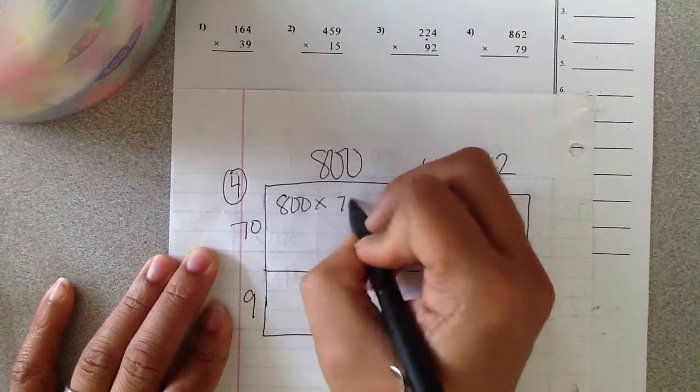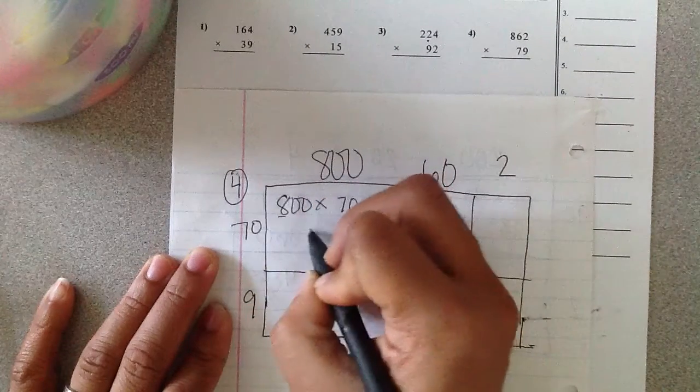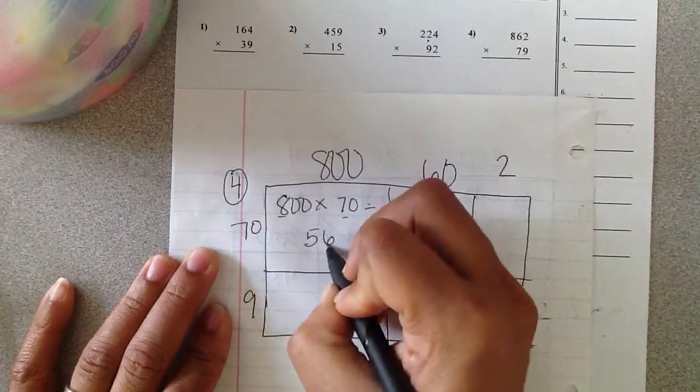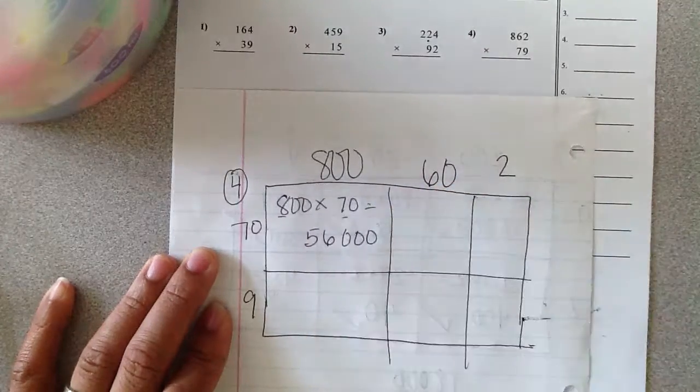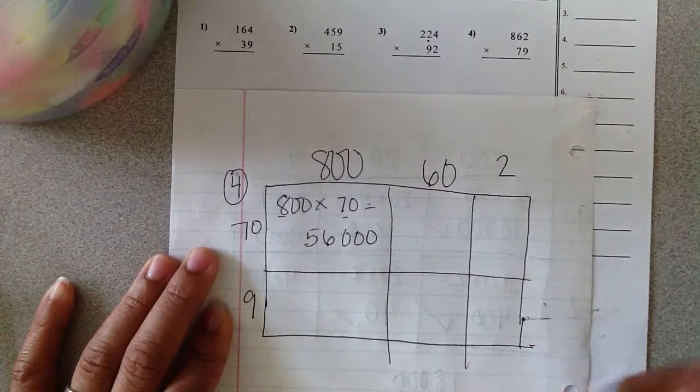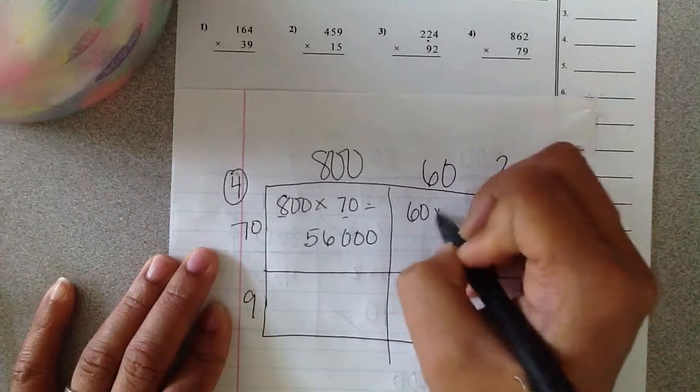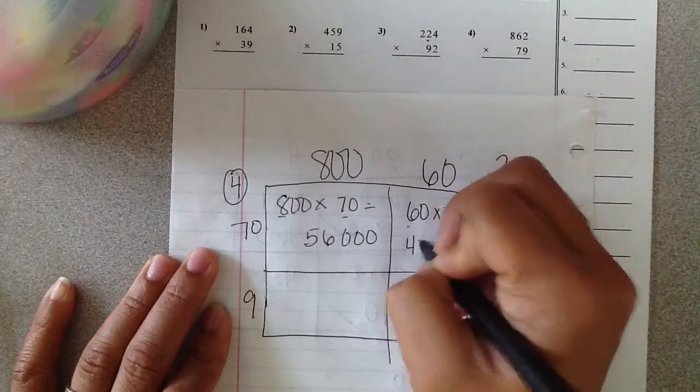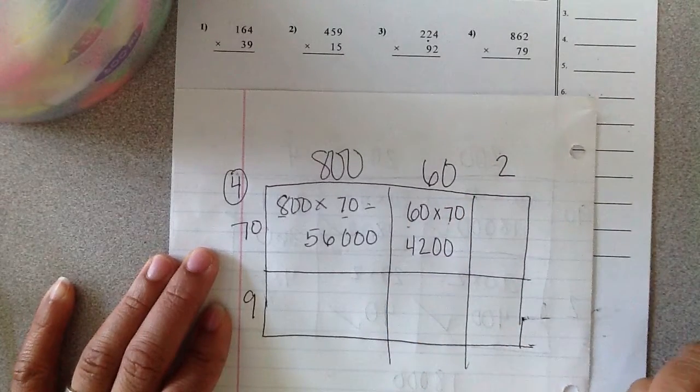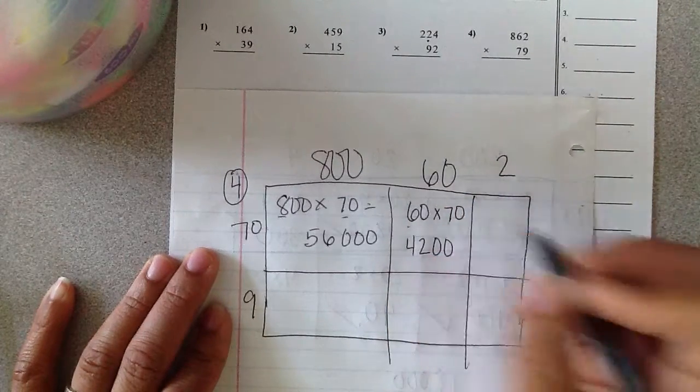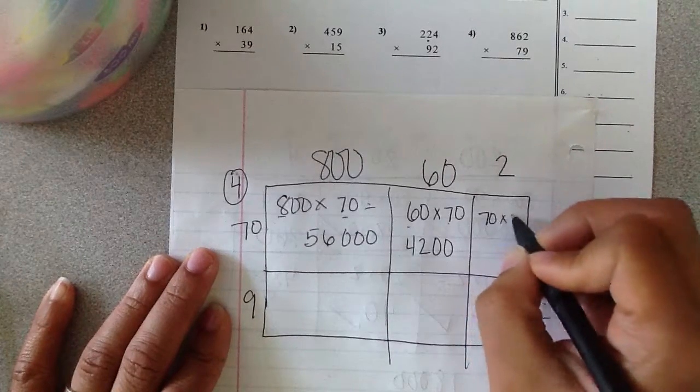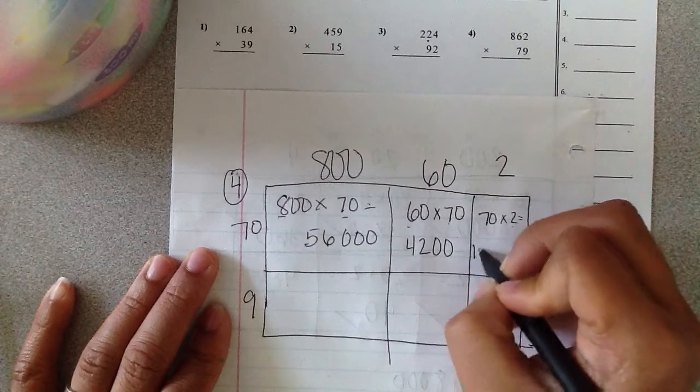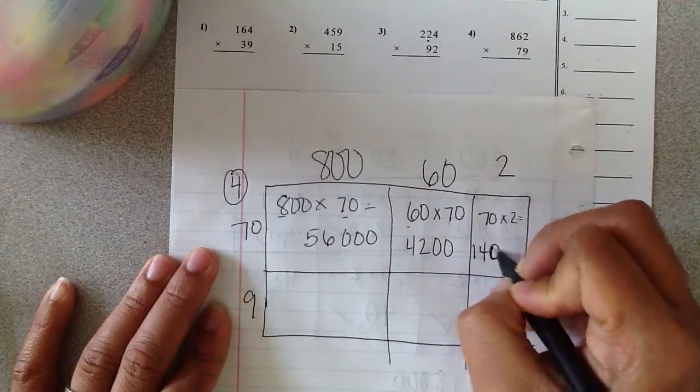Eight hundred times seventy. Eight times seven is fifty-six and then I need three zeros. Sixty times seventy. Six times seven is forty-two and I need two zeros because two zeros are my factors. Seventy times two. Two times seven is fourteen and one zero there.